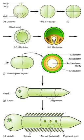As embryogenesis proceeds, the resulting cells will organize so that one end becomes the first root while the other end forms the tip of the shoot. In seed plants, the embryo will develop one or more seed leaves — cotyledons. By the end of embryogenesis, the young plant will have all the parts necessary to begin its life. Once the embryo germinates from its seed or parent plant, it begins to produce additional organs through the process of organogenesis.